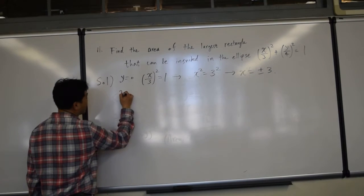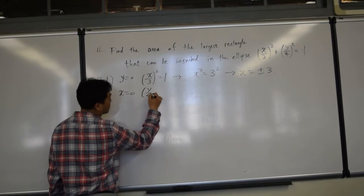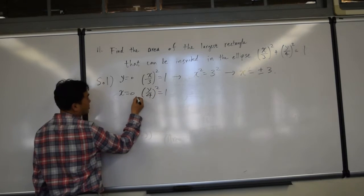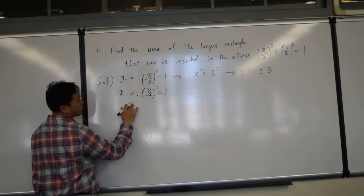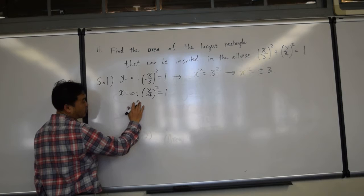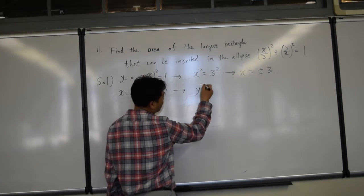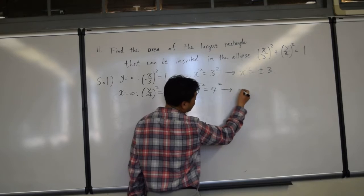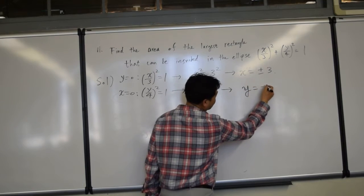If you set x equal to 0, then x goes away and you get y over 4 squared equal to 1, which gives you y squared equal to 4 squared, which gives you y equals plus or minus 4.